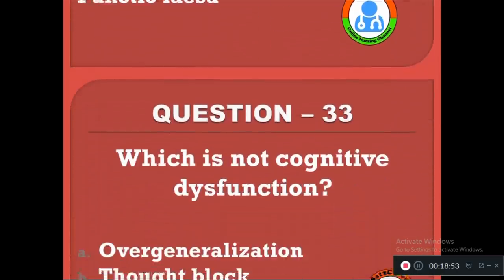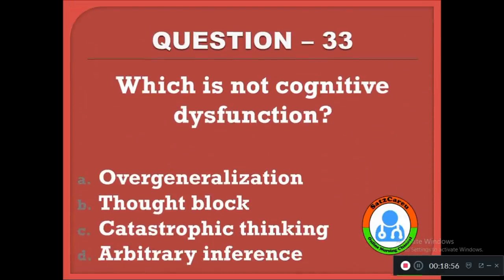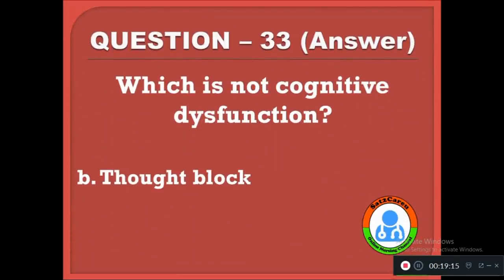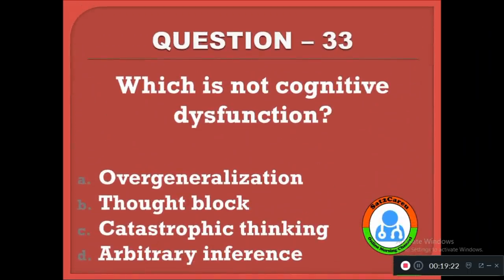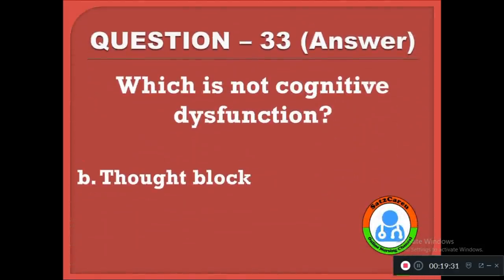Question 33: Which is not a cognitive dysfunction? Option A: overgeneralization, B: thought block, C: catastrophic thinking, D: arbitrary inference. The correct answer is B, thought block is not a cognitive dysfunction. Overgeneralization, catastrophic thinking, and arbitrary inference are all disturbances in the process of thinking, whereas in thought block the patient simply cannot think — it is a different type of abnormality.